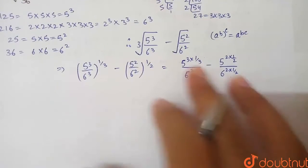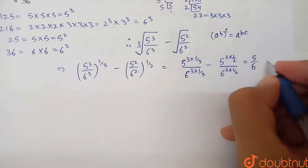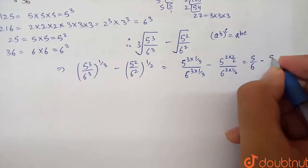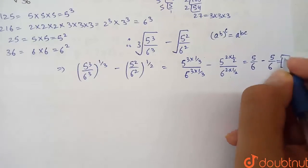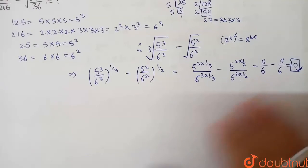Here, 3 into 1 by 3 is 1, which is basically 5 by 6. 3 into 1 by 3 is 1, minus 2 into 1 by 2 is 1, again 5 by 6. So basically, this equals 0. Hence, this expression's simplified value is nothing but 0.